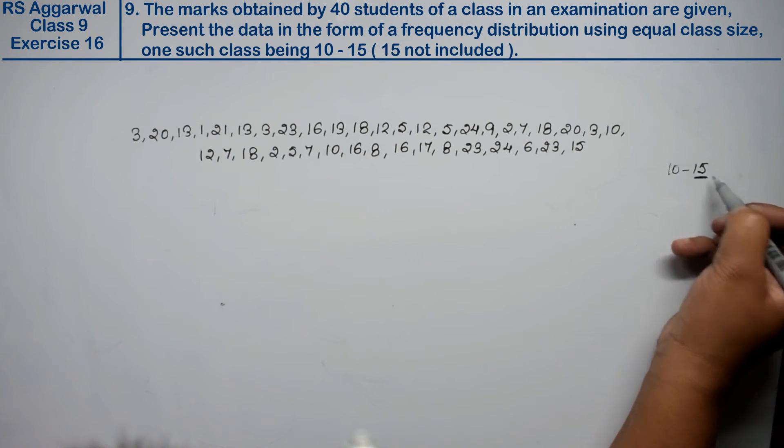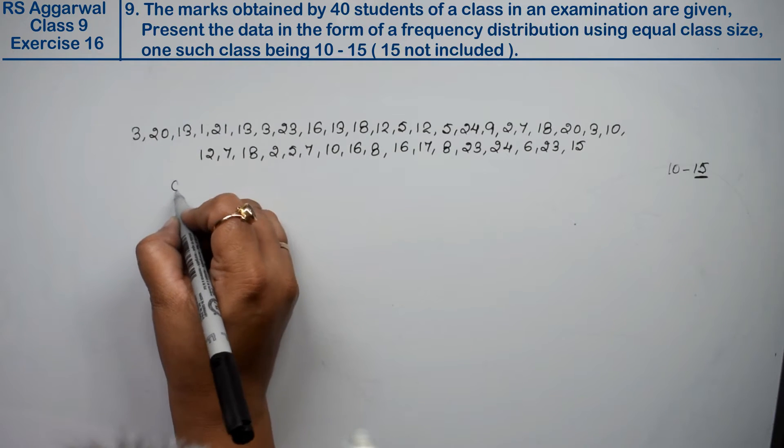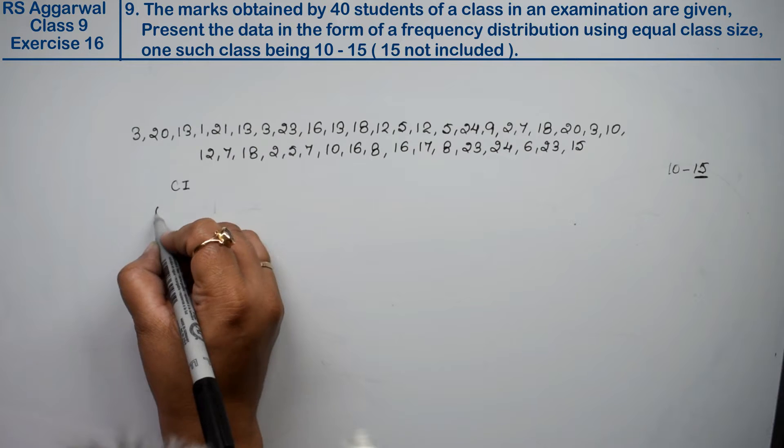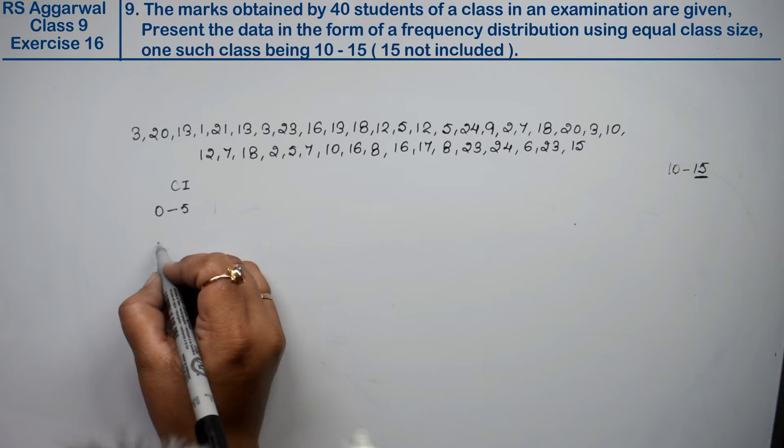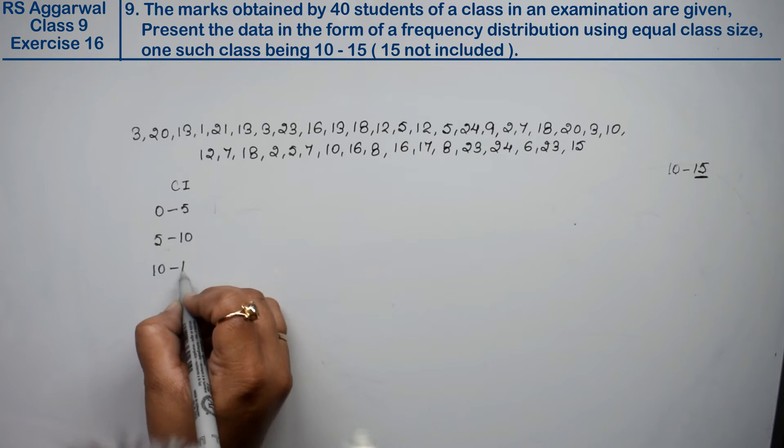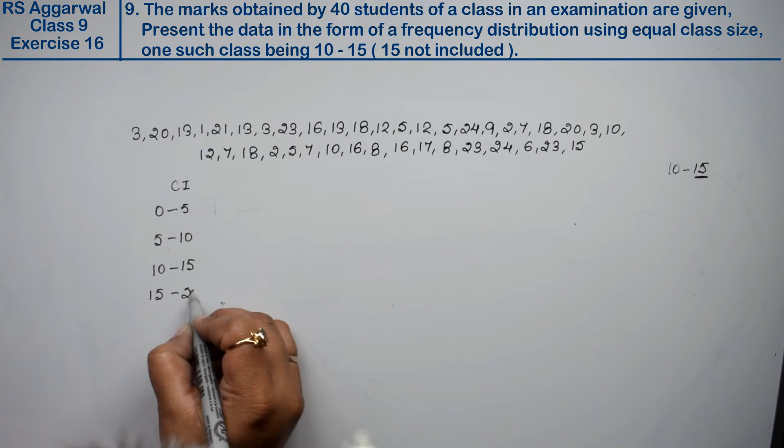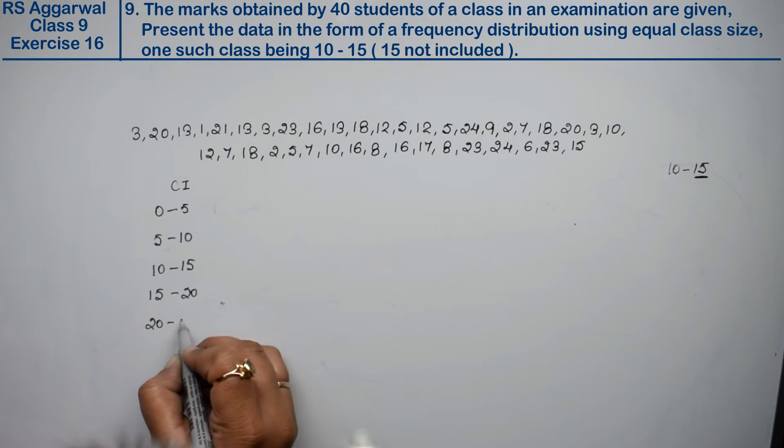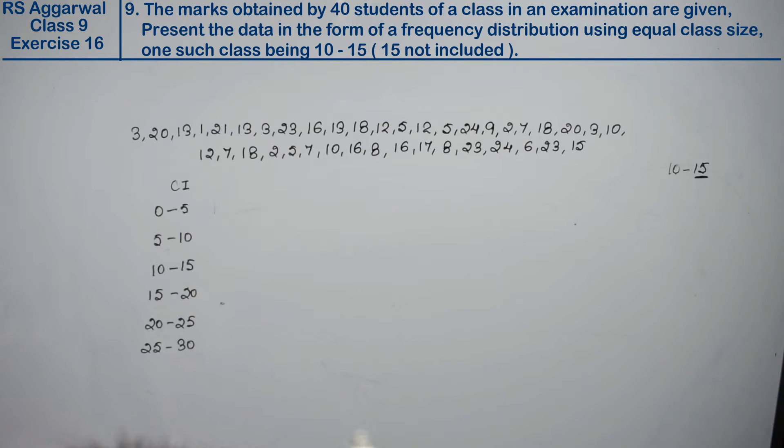We need to create a frequency distribution table. They're saying 10 to 15, where 15 is not included. So how will we take it? We'll take class intervals with a difference of 5: 0 to 5, 5 to 10, 10 to 15, 15 to 20, 20 to 25, and 25 to 30. The maximum is not more than 30, so we've taken up to 30.